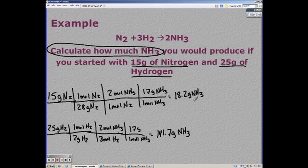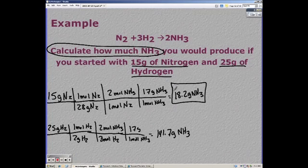So 18.2 is our correct answer. Also make sure that you know the terms limiting reactant and excess reactant. In this case, nitrogen is our limiting. Whichever reactant gives you the smaller amount is always limiting, and the other one is in excess.